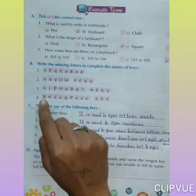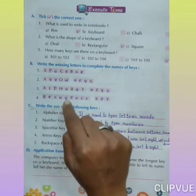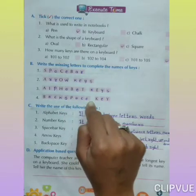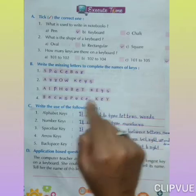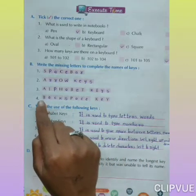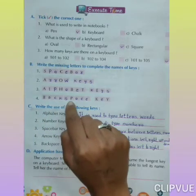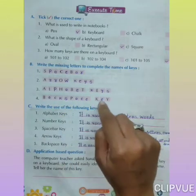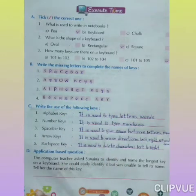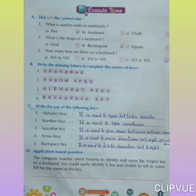Number 4: B _ _ _ _ P _ _ _ K _ Y. Write the correct spelling. B-A-C-K-S-P-A-C-E — Backspace key. What is its use? It is used to delete characters to the left.